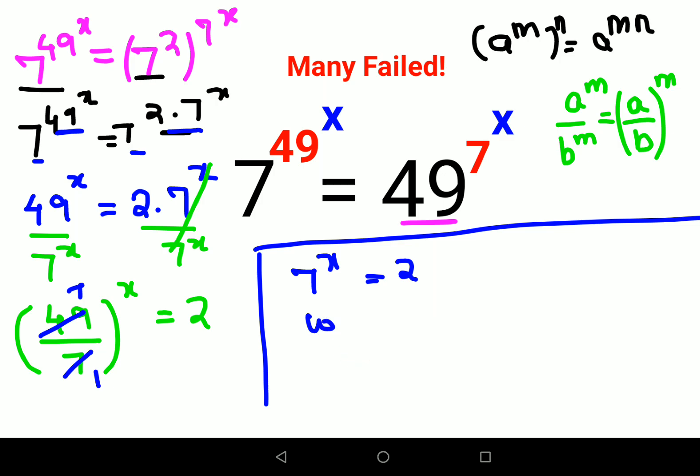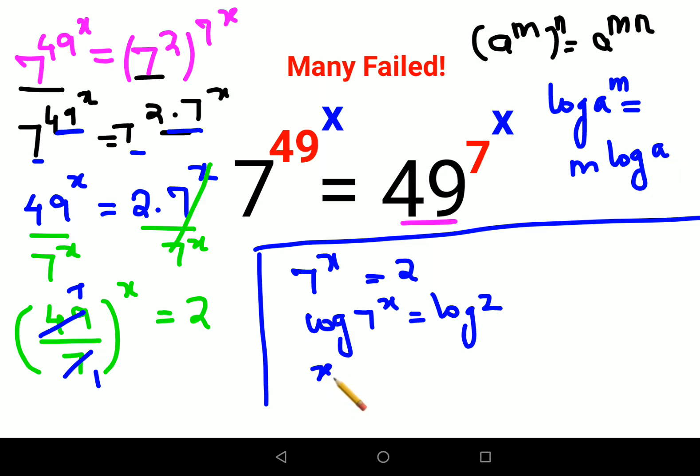So we will take log on both sides. Log of 7 raised to x equals log 2. And in logarithm we can also do this: log a raised to m can be written as m log a. So we will have this as x log 7 equals log 2.